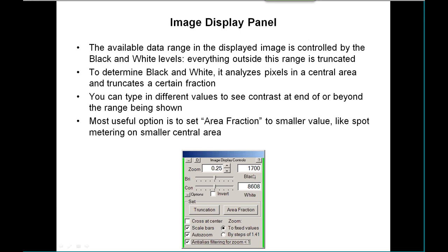The program analyzes the central area of the image, looks at the pixels there, and figures out what settings will truncate a certain small fraction of the pixels. That usually works pretty well. You can actually type numbers into these boxes if you want to see contrast beyond the range that's being shown.